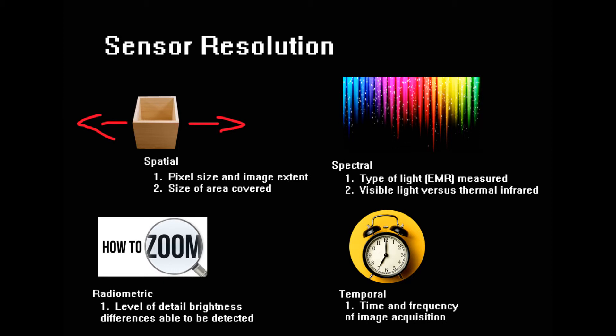Then you have radiometric, which is the level of detail and brightness differences able to be detected. Just think of radiometric as the accuracy when you zoom in or zoom out. Is it fuzzy or not fuzzy? Then you also have temporal, which is the time and frequency of image acquisition. Remember when I said before that if you take it during an anomaly, you're going to get screwed up results. That's what that is. It may also be how long you do the study for. If you do it over a year, you'll get different results than if you do it over 24 hours.